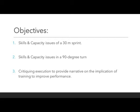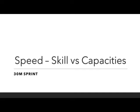This vlog will evaluate the skill and capacity issue of a 30m sprint, looking at both the acceleration and max velocity over two cases, the skill and capacity issue of a 90 degree turn, studying the technical execution and its implications on the mechanical principles, and critiquing the execution to provide narrative on the implication to programming and training to improve performance.